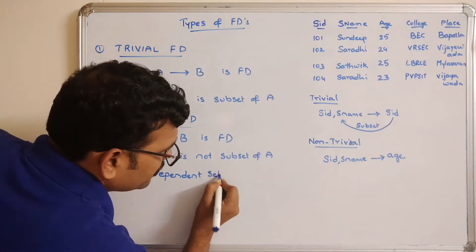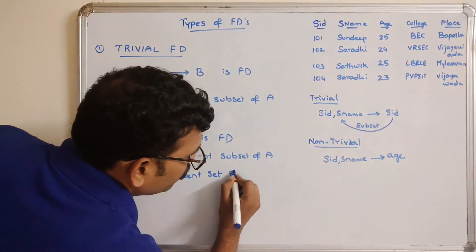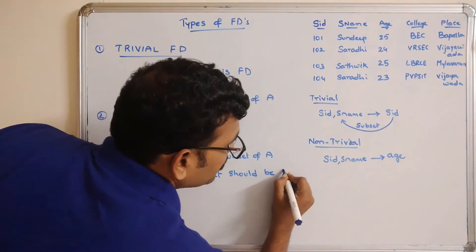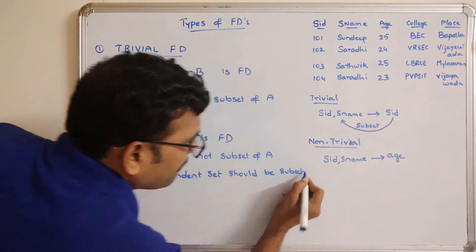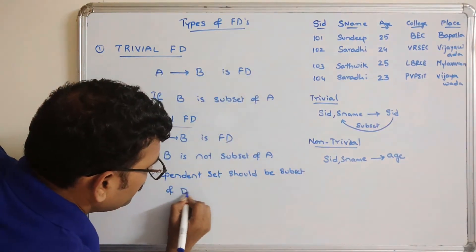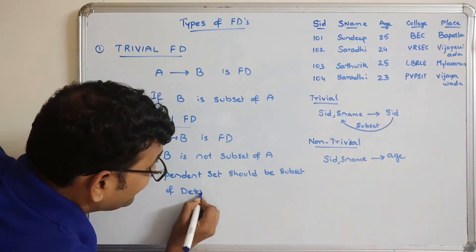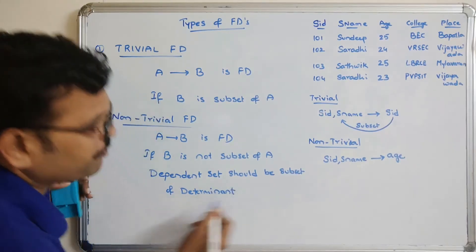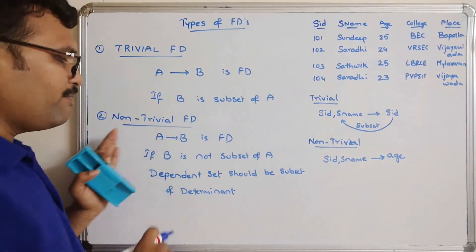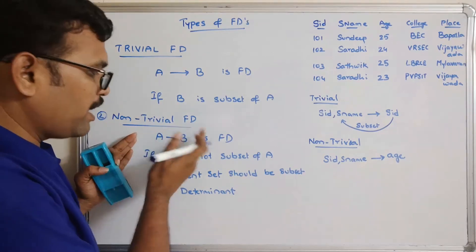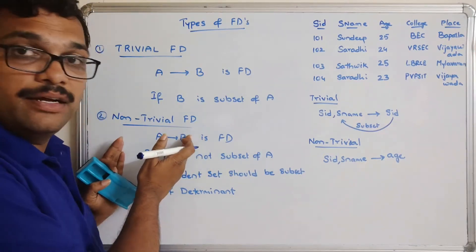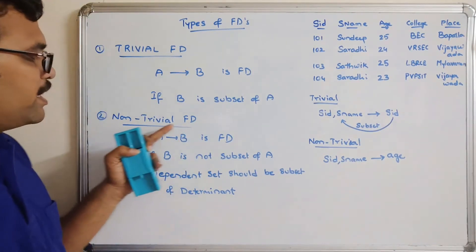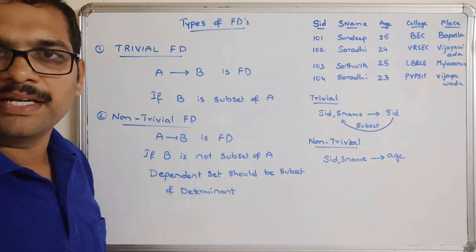The dependent set should not be a subset of the determinant. On the left-hand side is the determinant; on the right-hand side is the dependent. This type is called non-trivial functional dependency.